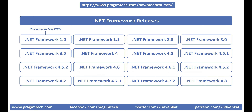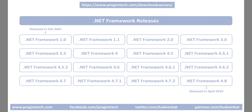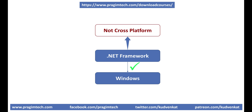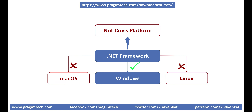.NET Framework 4.8 is the last version of .NET Framework and it was released in April 2019. .NET Framework is built for Windows, meaning you can only use it to build applications on the Windows platform. In short, .NET Framework is not cross-platform, meaning you cannot use it to build applications on Linux or macOS, for example.